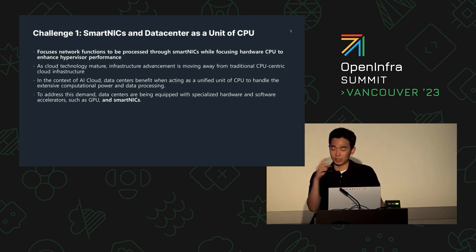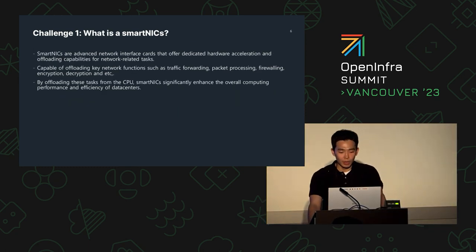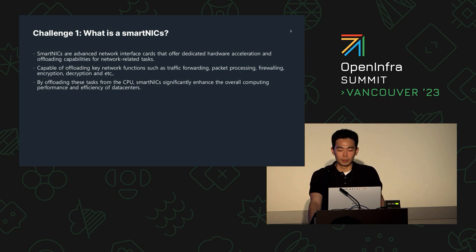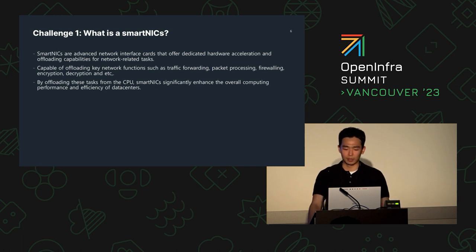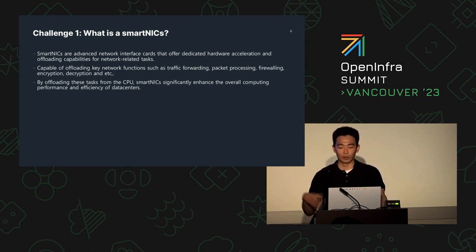To address these demands, many companies are equipping data centers with specialized hardware accelerators such as GPUs, FPGAs, and ASICs. Today we'll be specifically talking about SmartNICs — advanced network interface cards that offer dedicated hardware acceleration and offloading capabilities for network-related tasks. They handle packet processing, encryption, decryption, and more. Today we're focusing on offloading network tasks from the CPUs to optimize performance.